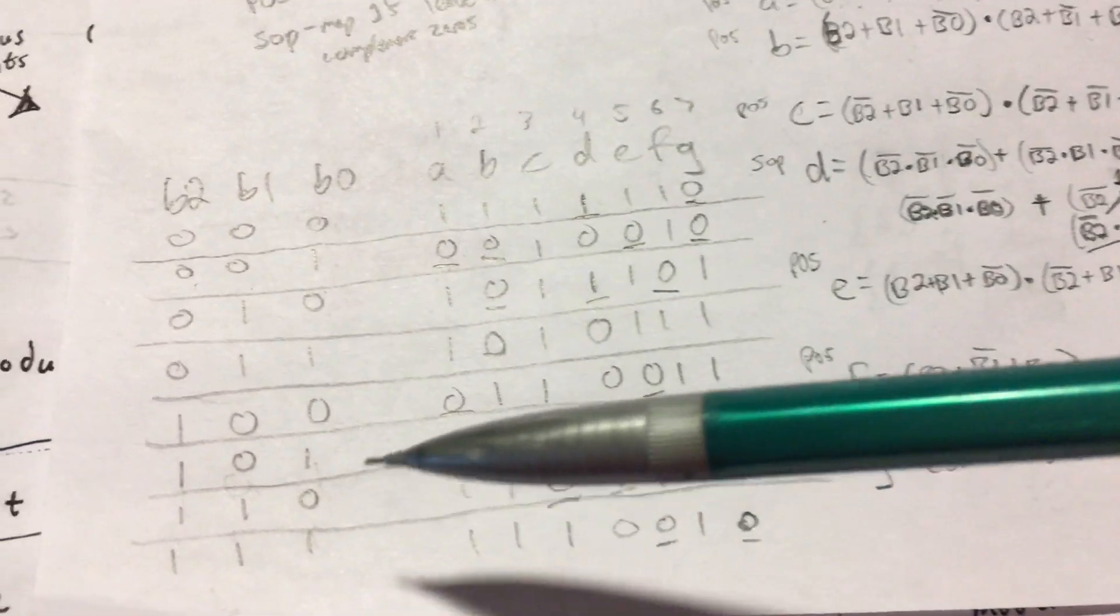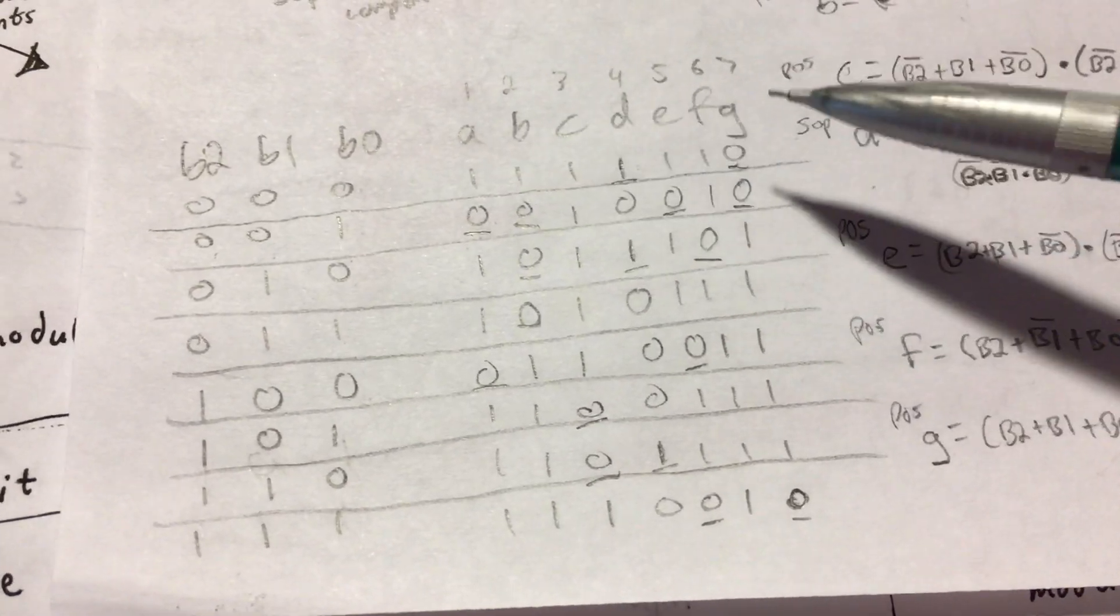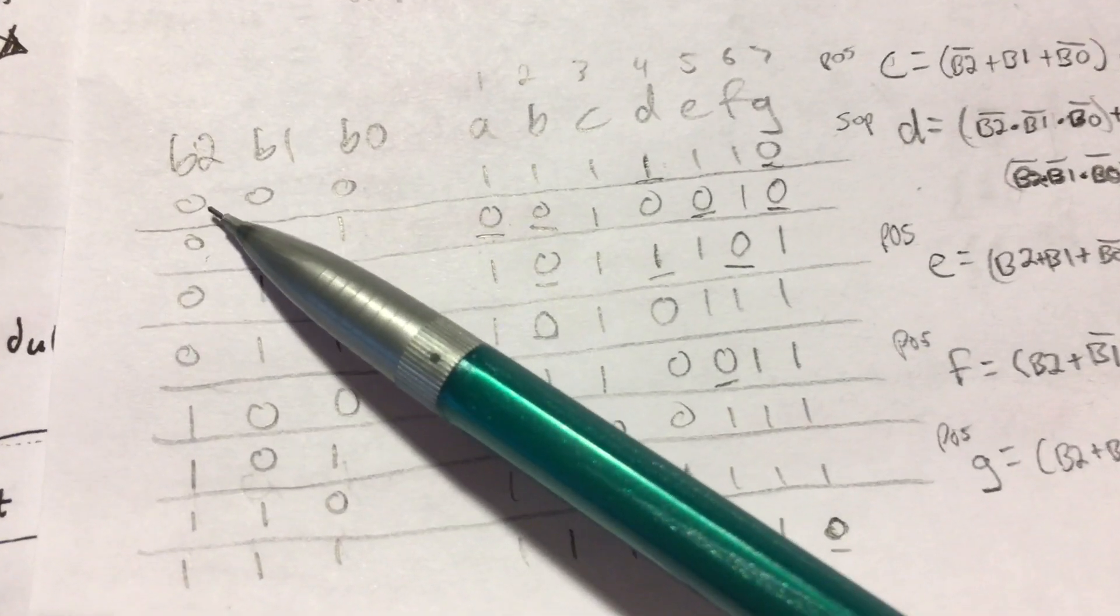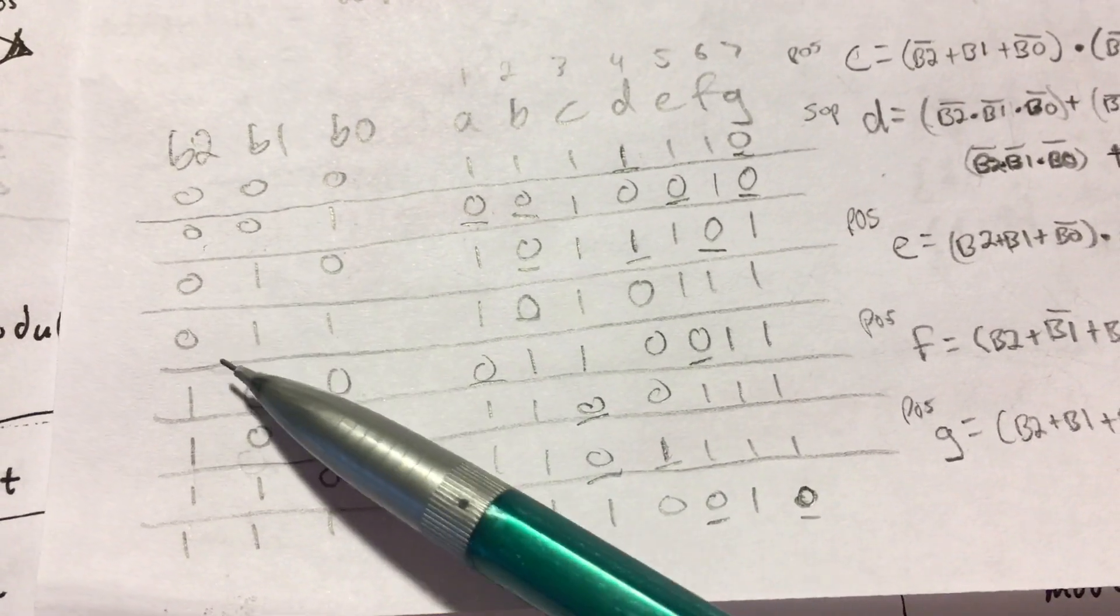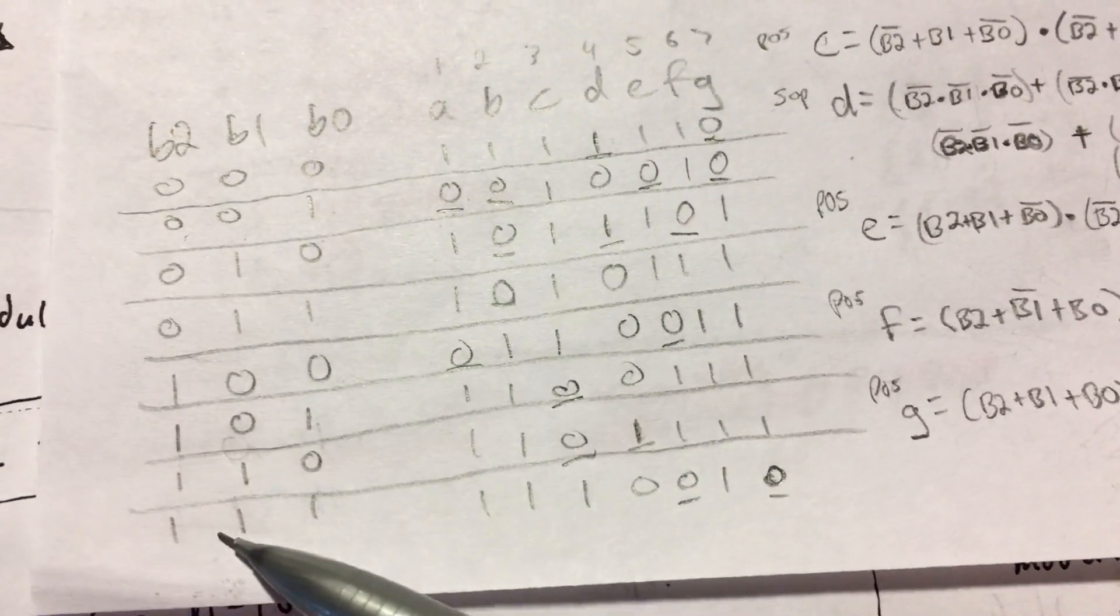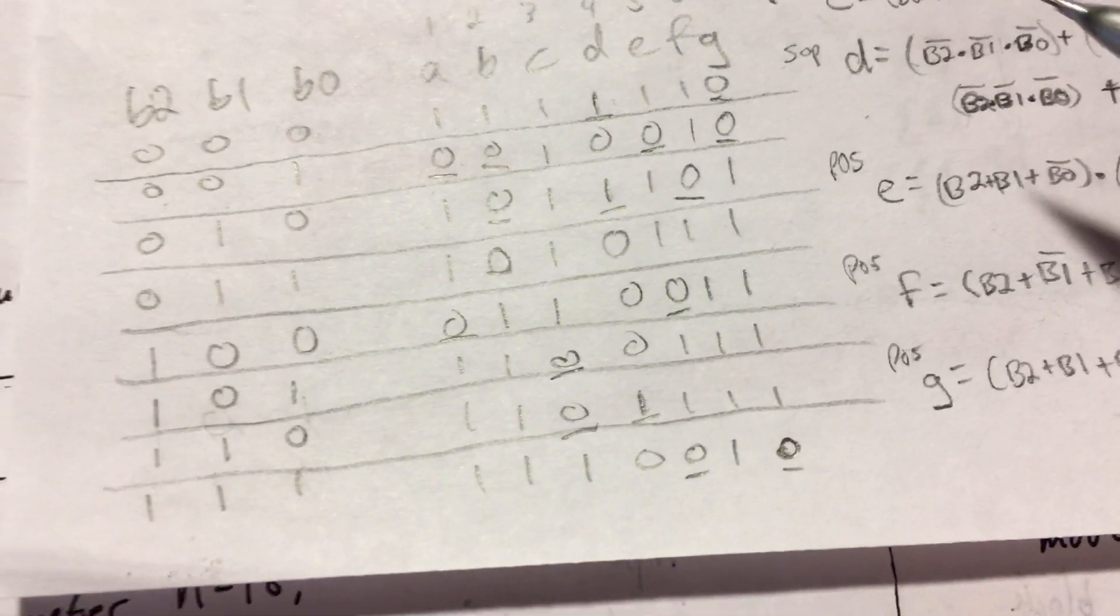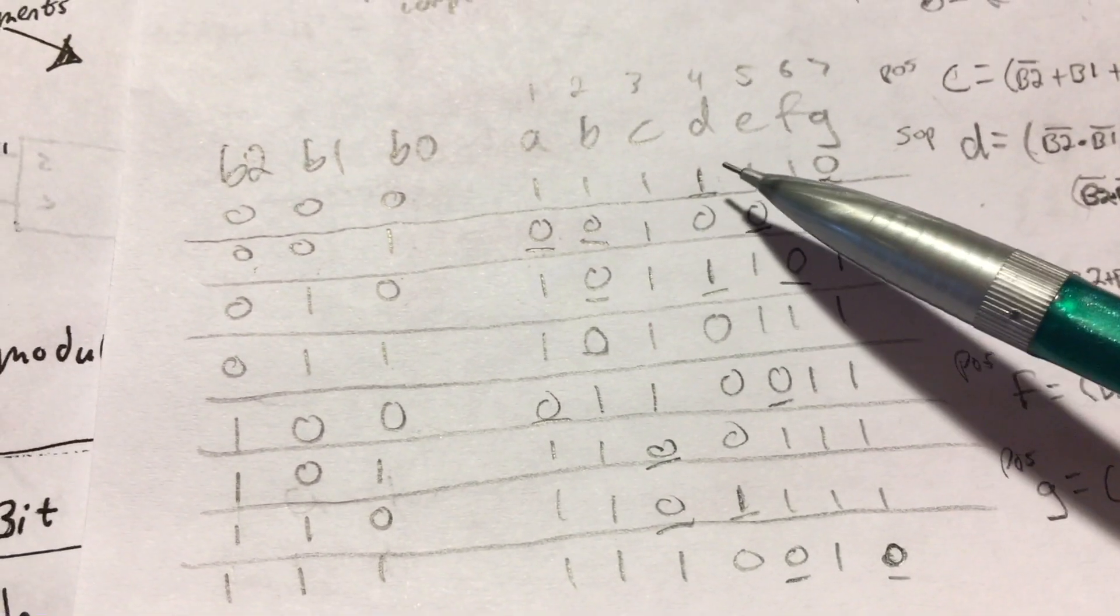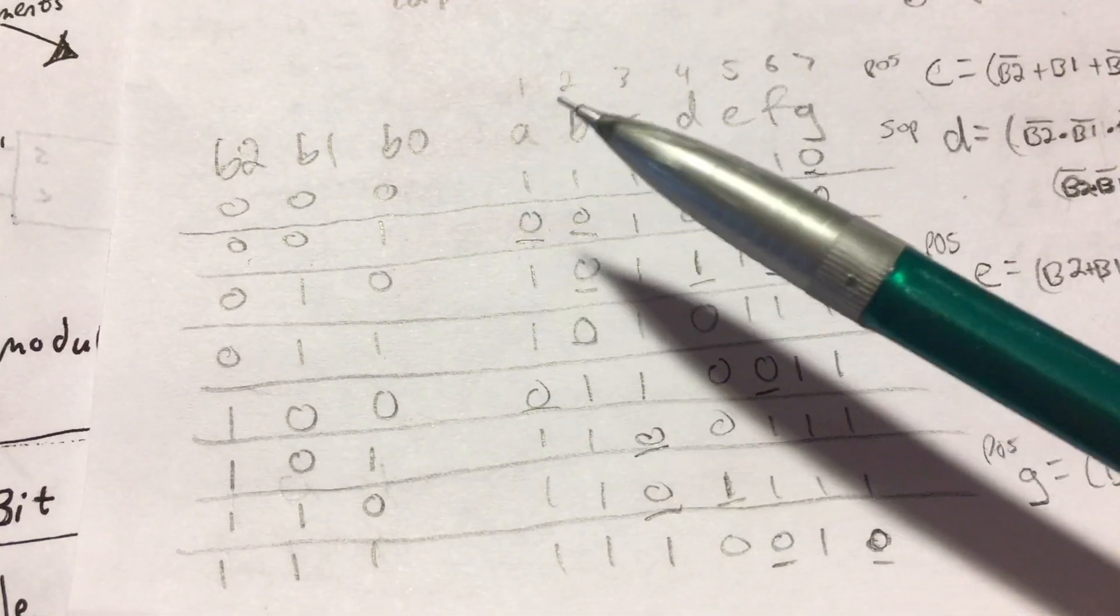First, you're going to need to write a truth table with 3 inputs and 7 outputs for a 7 segment display. You're going to count up 0, 1, 2, 3, 4, 5, 6, 7, and these ones represent the segments that we want illuminated in order to give us that decimal digit.